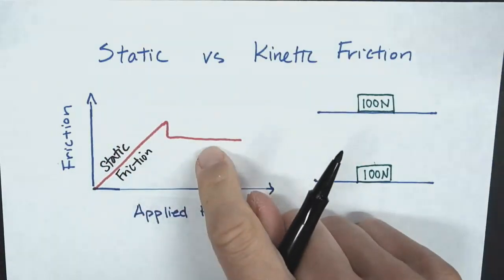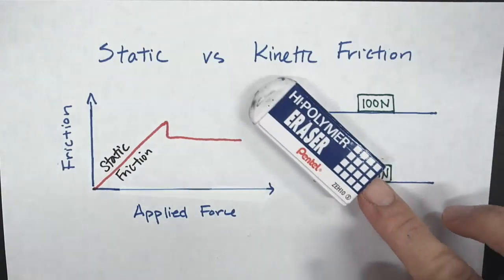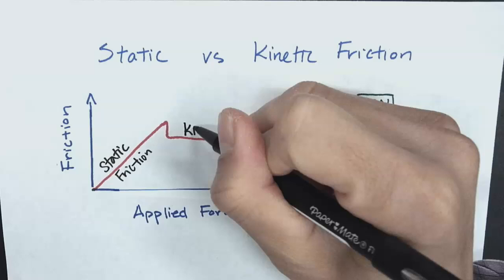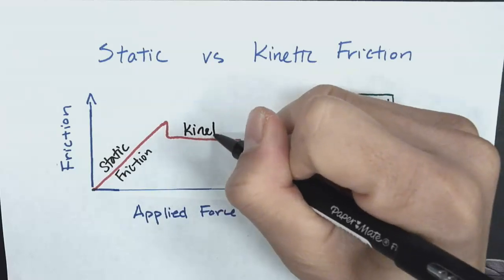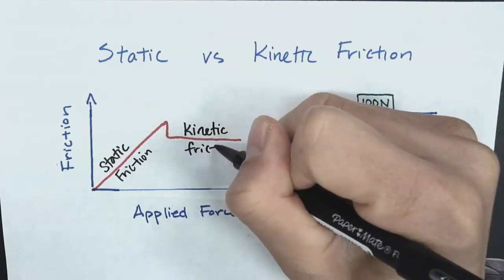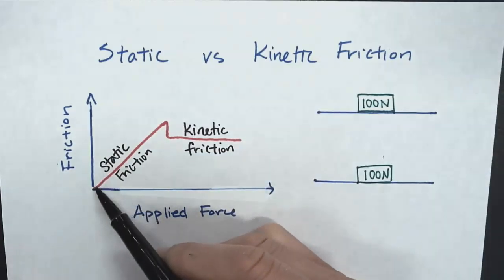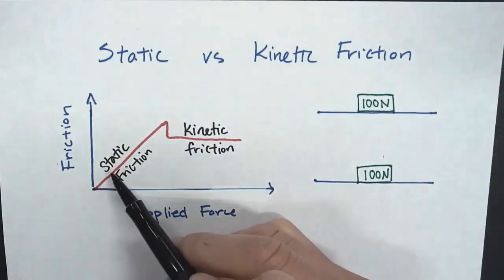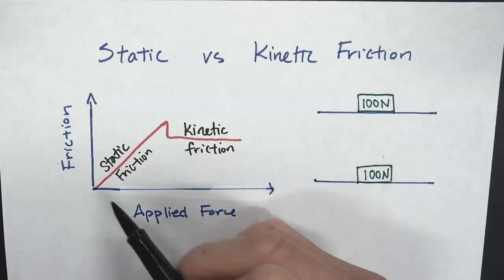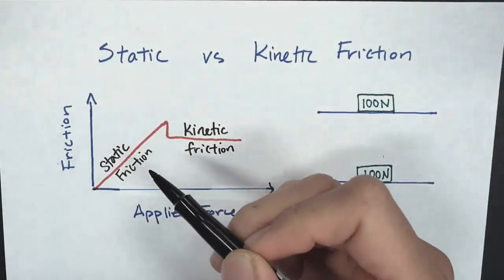And then once it starts to move — once I'm pushing it and it is moving — we call this kinetic friction. What you notice is that the static friction will increase as the applied force is increased. So the more applied force you have, the more static friction.